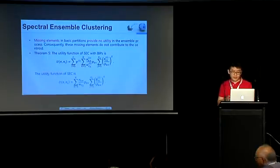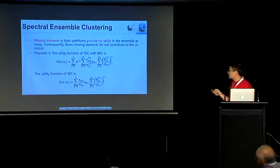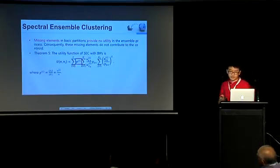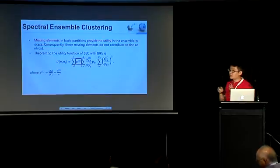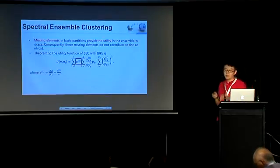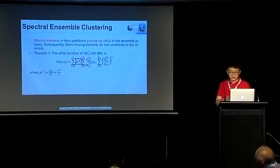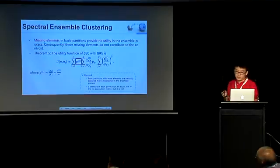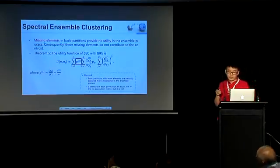As shown in theorem 5, we can see here is the utility function of SEC. Those two utility functions are different because of this factor pi. Pi is defined as a ratio actually. The ratio is between the number of instances used for the i-th incomplete partition, and the number of the overall instances. This means that our proposed method SEC will give more importance for the partition which have more elements.